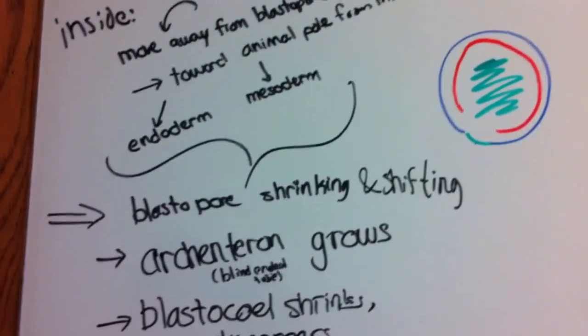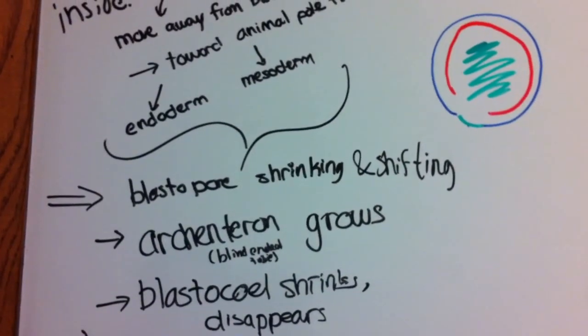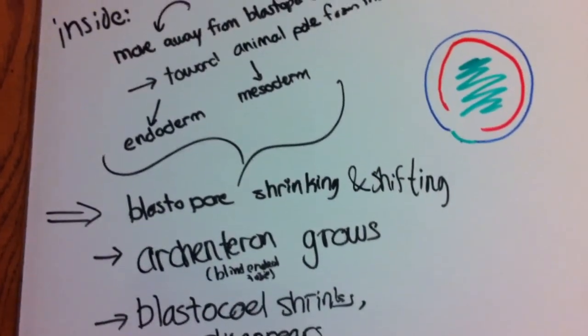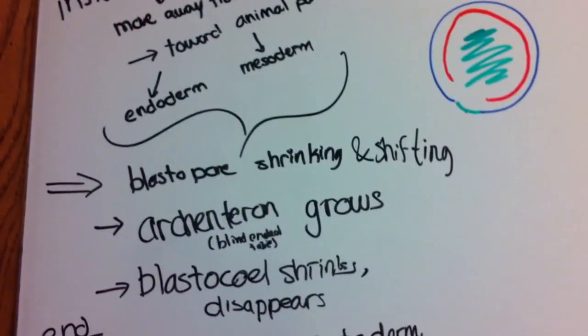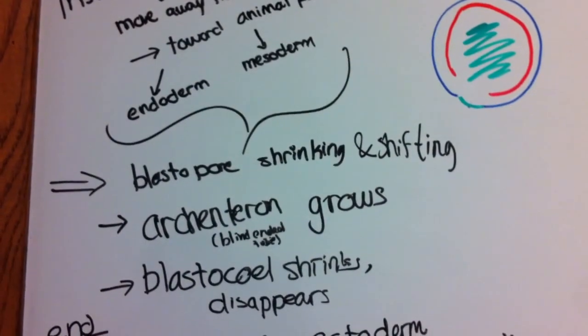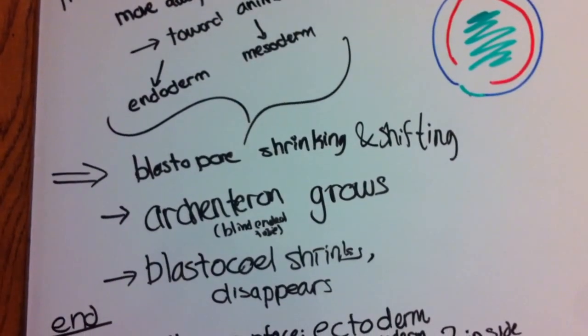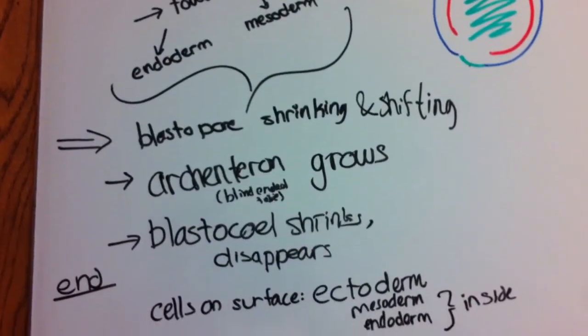We'll eventually have the blastopore shrinking and shifting as more cells move inward. This will result in the archenteron growing and the blastocele shrinking and eventually disappearing.